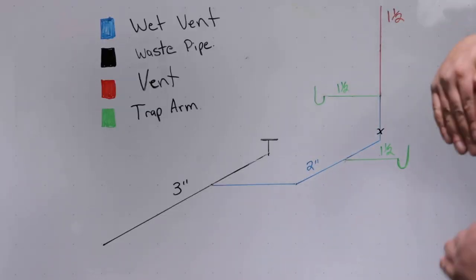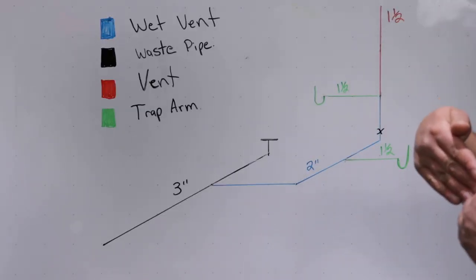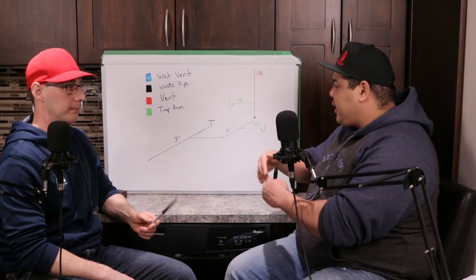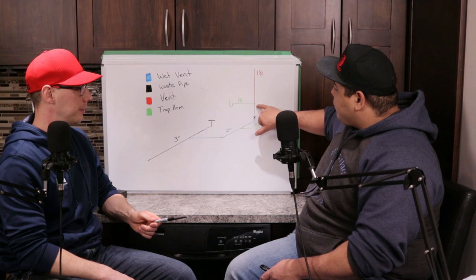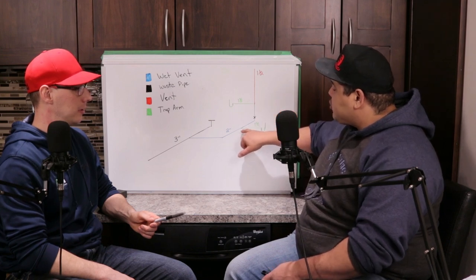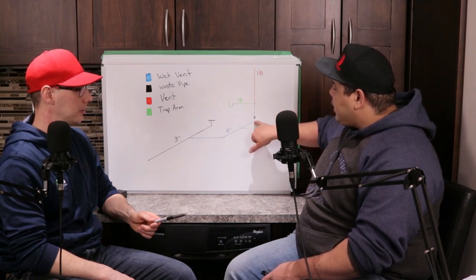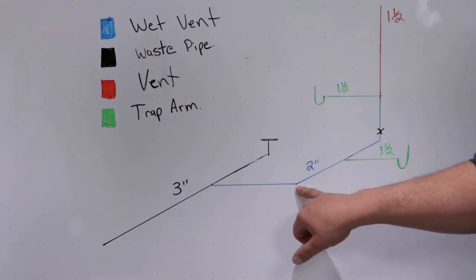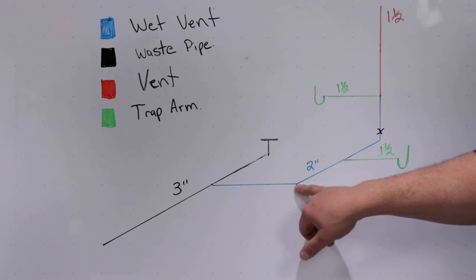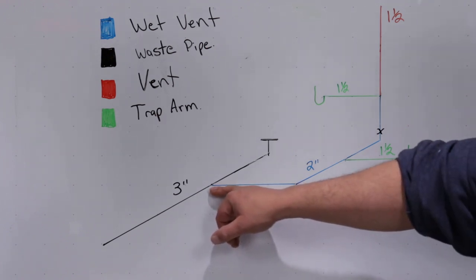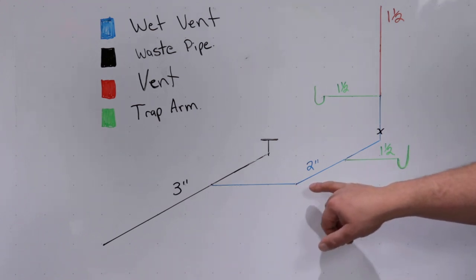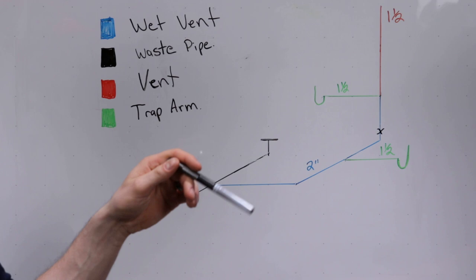Going from vertical to horizontal on a drain, you cannot have a 90 here. This has to be two 45s. This here has to be a Y. This here has to be a 45 - this cannot be a 90. You could have a hub 45 and a fitting 45 glued together to run back into your toilet or whichever way you're running. You cannot run a 90.